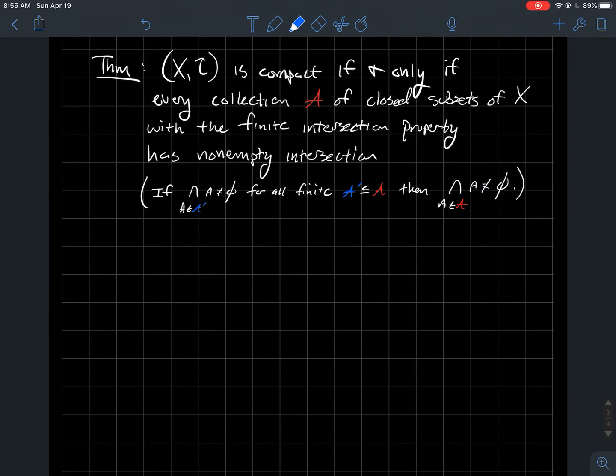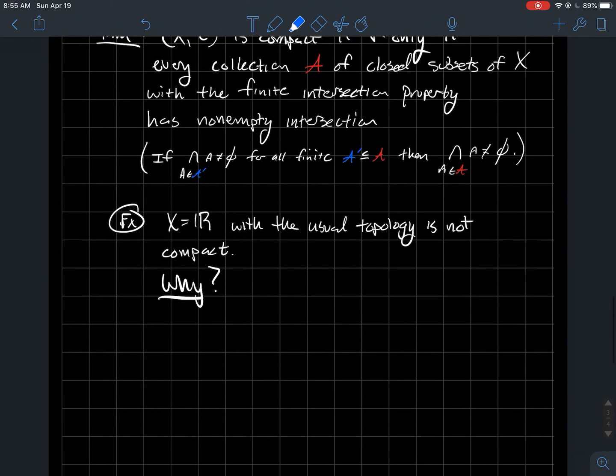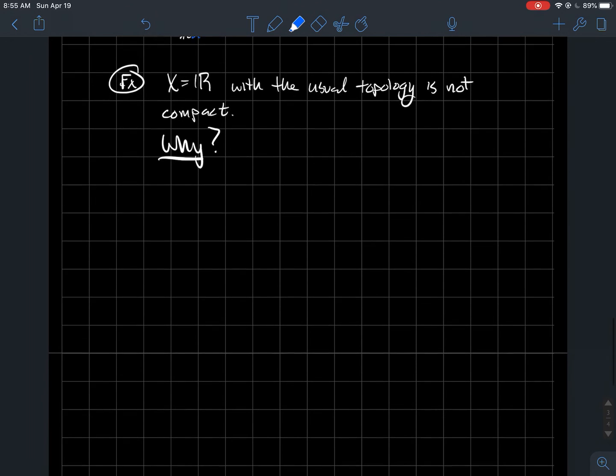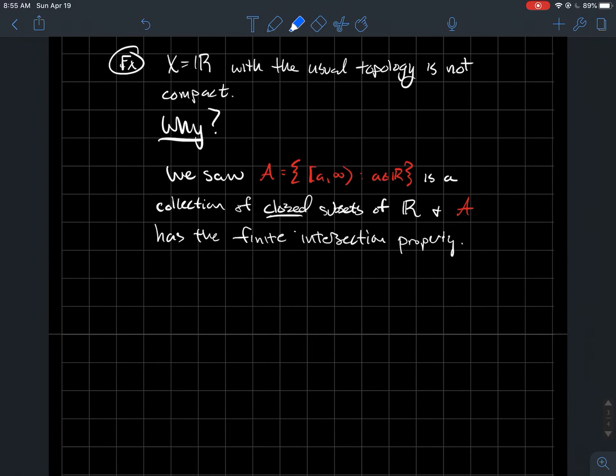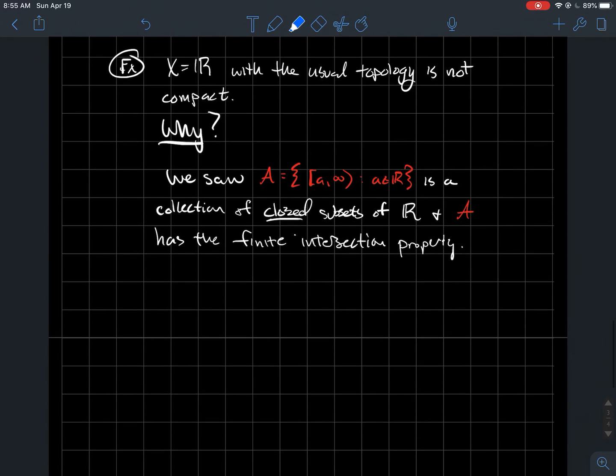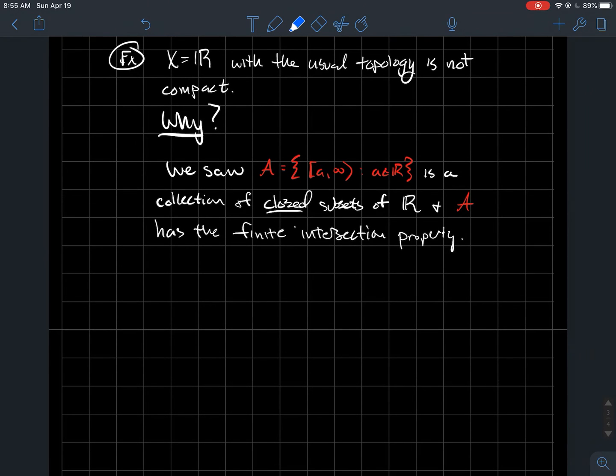This is reminding you of the example we covered at the beginning. If my topological space is the real line with the usual topology, then this is not compact. I'll explain why it's not compact using this new theorem. In our examples earlier, we said that fancy A of all these closed intervals, these are closed with the usual topology,